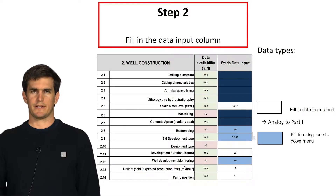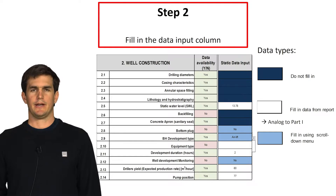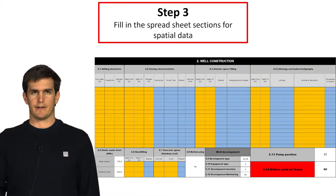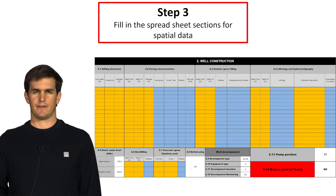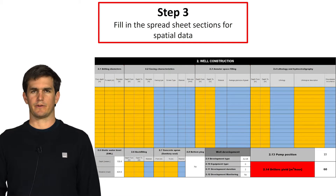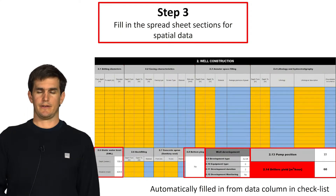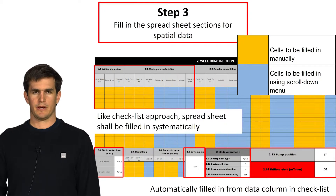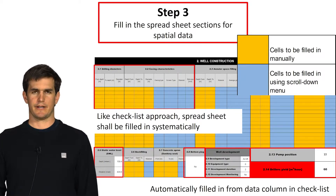The final cells are the dark blue cells. Those are for specific data only and cannot be inputted in the checklist — they will have to be inputted in the specific spreadsheet that we will look at now. What you see here is that specific spreadsheet. You can see in the white cells that data from the checklist has been transferred automatically. You will put data in the yellow cells manually and in the blue cells using the drop-down menu. Like the checklist approach, this is straightforward and you can systematically input your well construction data.